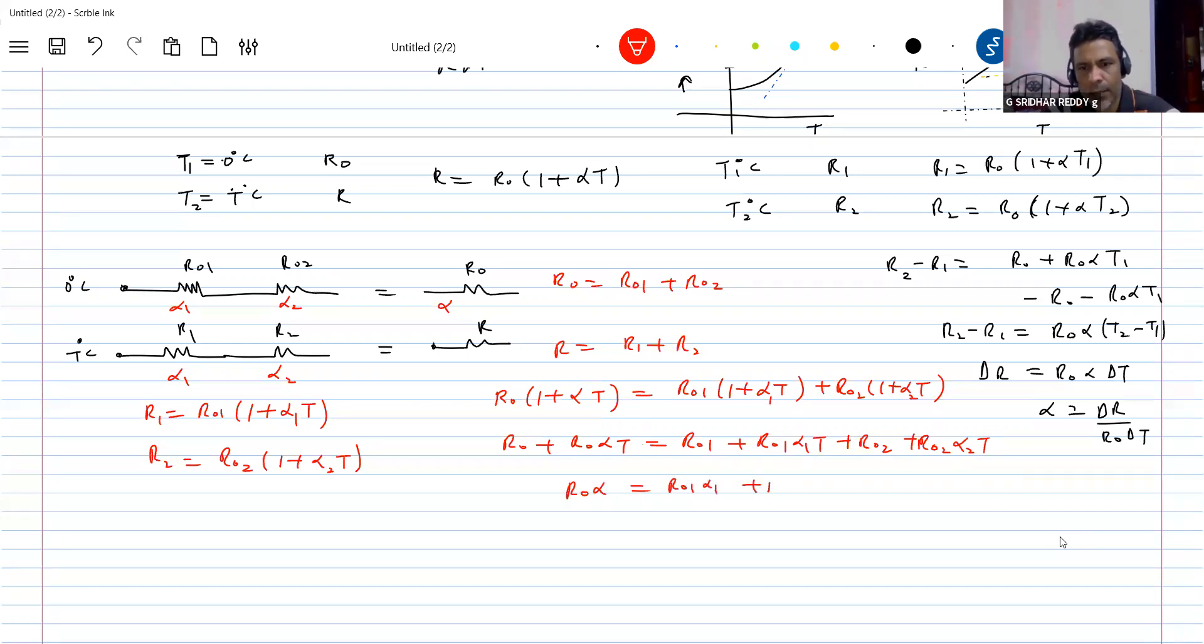R0 alpha equals R01 alpha 1 plus R02 alpha 2. Divided by R0, so alpha equals R01 alpha 1 plus R02 alpha 2 divided by R01 plus R02.